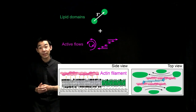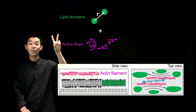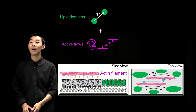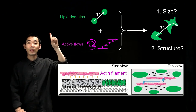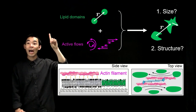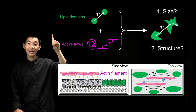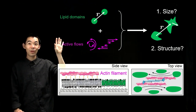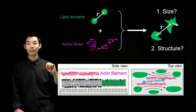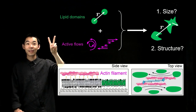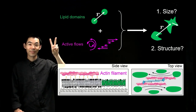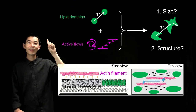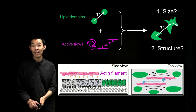We would like to see two things about this system: first, how does the size of the domains change when you add active flows; and second, how does the active flow modulate the structure. So let's first talk about size.